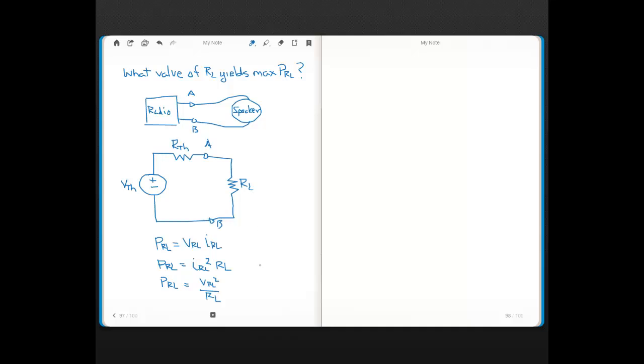So these are the three equations written specifically for this load resistor RL. Now, for the derivation that we're going to do here, we could choose any of these three equations and we'd get the same result. But I chose this bottom one here to use that power for RL is the voltage across it squared divided by RL. No particular reason I chose this one other than I had to choose one of the three.